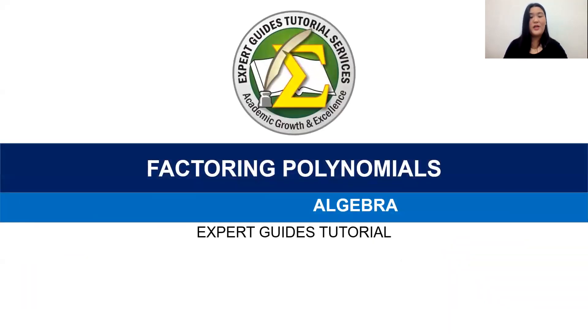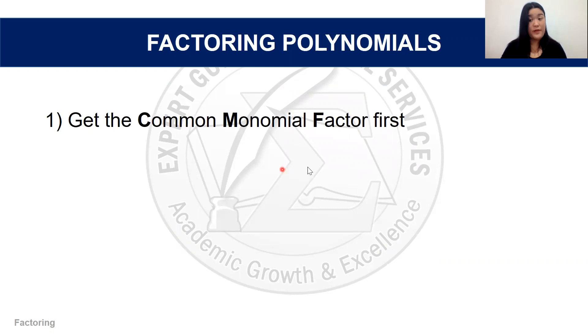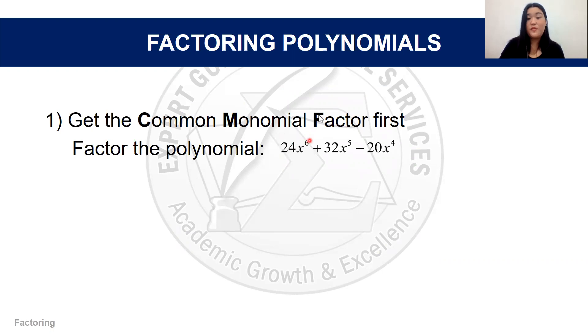In previous lessons we covered imaginary numbers as well as radicals. For today, we will be talking all about factoring polynomials. The first thing to take note of is getting the Common Monomial Factor, or CMF. The CMF is similar to the Greatest Common Factor but also involves getting the common variables. For example, we have the polynomial 24x⁶ + 32x⁵ - 20x⁴.